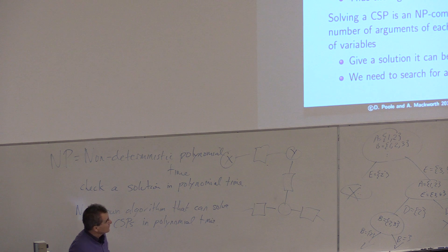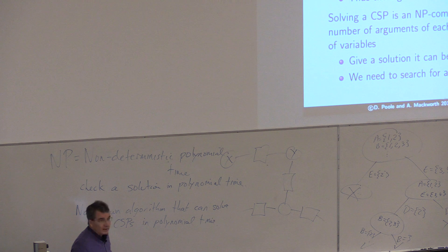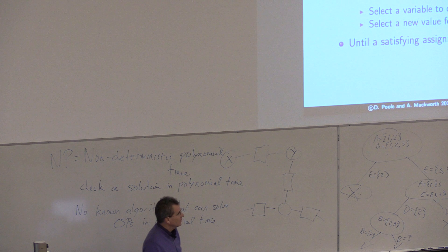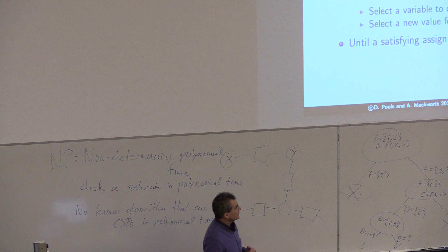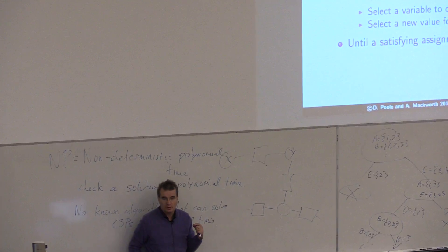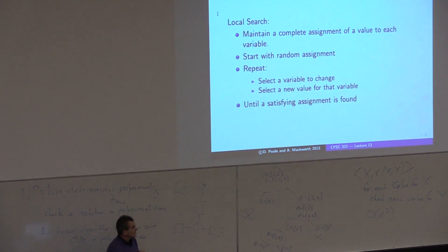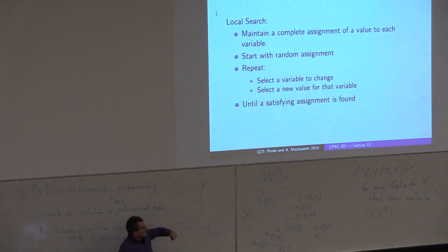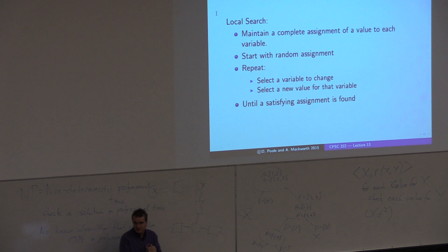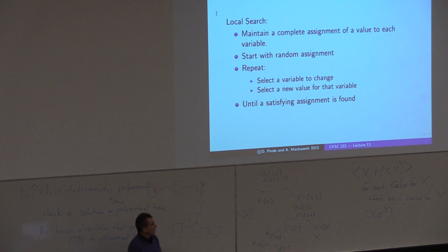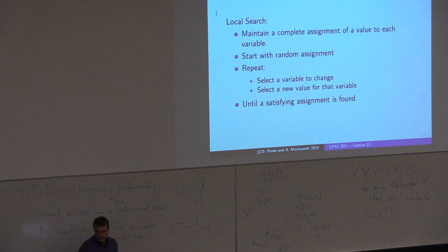E is the number of edges — constraints to be tested. For the next part of class, roughly the next week, we're going to look at local search: a whole lot of different algorithms for solving problems. We'll maintain a complete assignment of a value to each variable, start with a random assignment, and repeatedly select a variable to change or select a new value for it until we've found a solution.